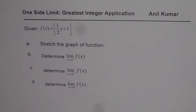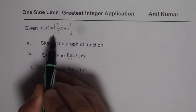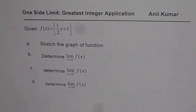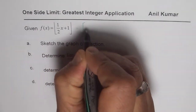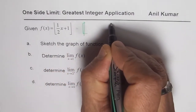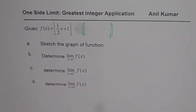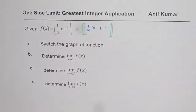The question is f of x equals the greatest integer of half x plus 1. The weird kind of brackets represent the greatest integer function. We may also write this using double-line brackets, and within those brackets the function is half x plus 1. Both notations mean the same thing.